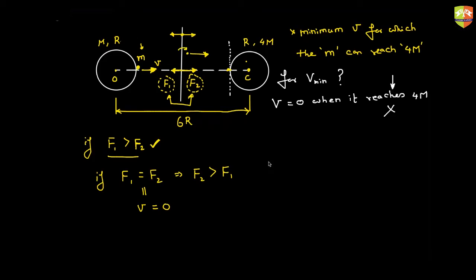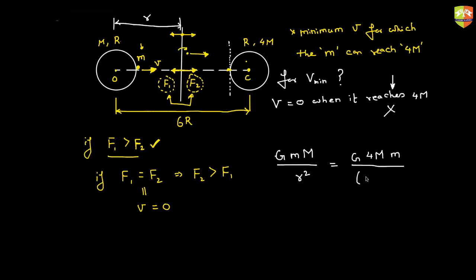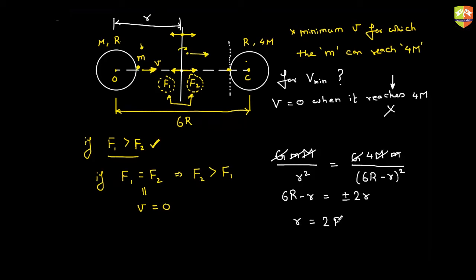Now we find that neutral point. Setting F1 equal to F2: GMm over r squared equals G(4M)m over (6R minus r) squared. Solving this expression, we get 6R minus r equals plus or minus 2r, which gives r equals 2R. So the neutral point is at a distance of 2R from the center of the first sphere.